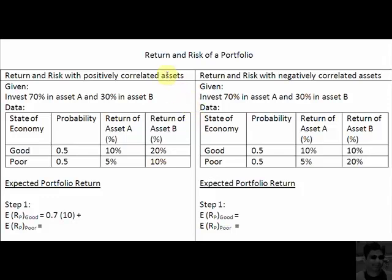Ladies and gentlemen, welcome to this screencast in which we are going to discuss the return and risk of a portfolio. We are going to do that under two scenarios. Scenario 1 is where the assets combined in a portfolio have returns that are positively correlated, so they move in the same direction. Scenario 2 is where the assets' returns are negatively correlated, so they move in opposite directions. Let's focus on the first case first — the positively correlated assets.